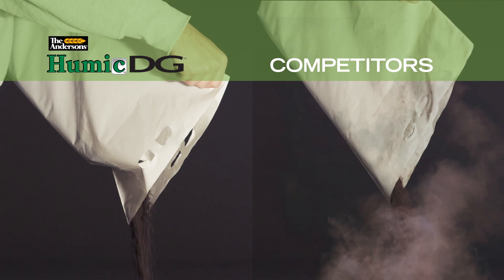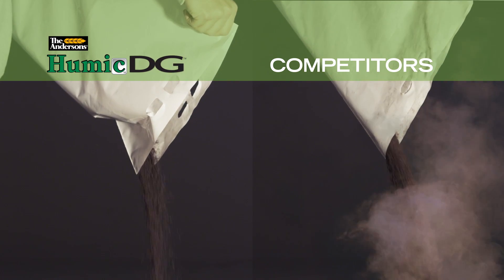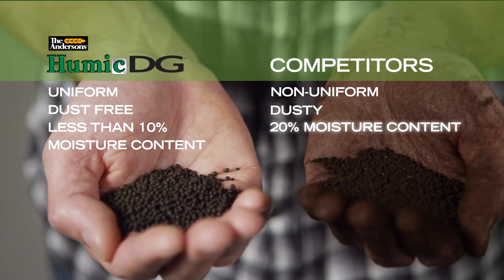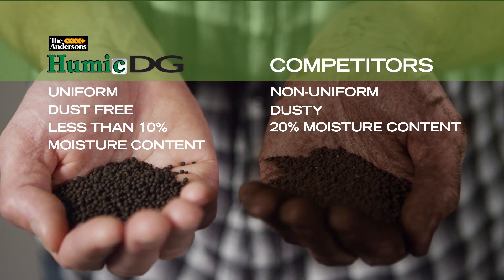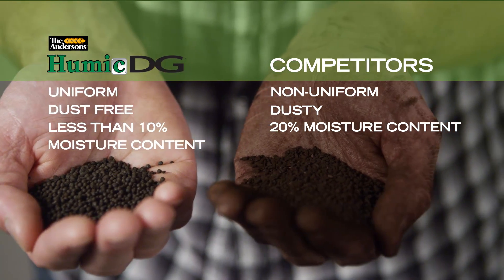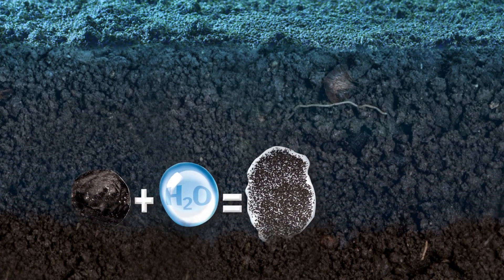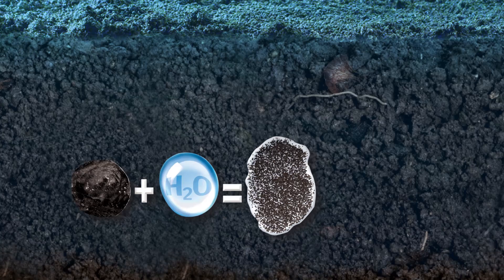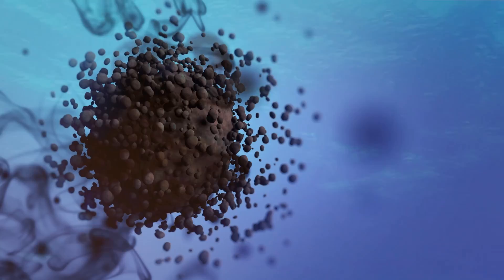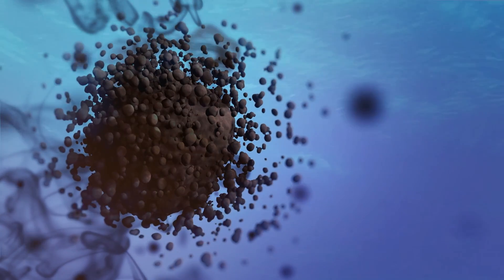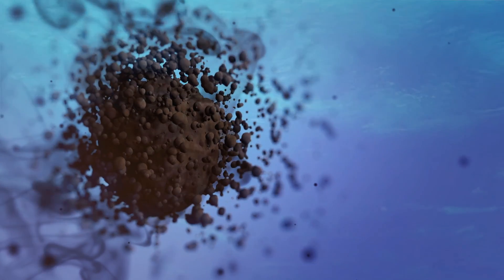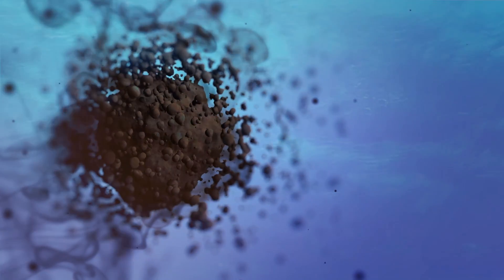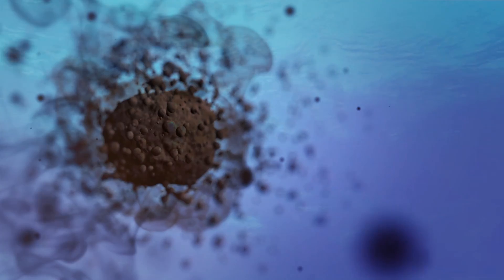Competitors' dry humic acid product is dusty, non-uniform, and contains up to 20% moisture, while Humic DG stays under 10% moisture. DG technology helps the granules break down and incorporate into the soil. Each granule dissolves into thousands of microparticles that move into the root zone, making nutrients more available to the plant quicker.